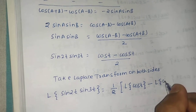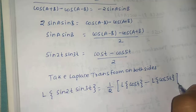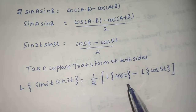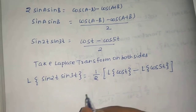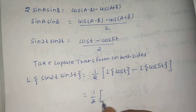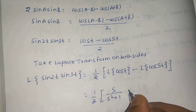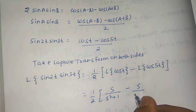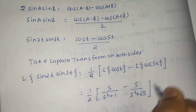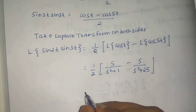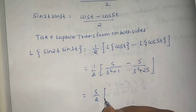We know the formula for the Laplace transform of cos(at) is s/(s²+a²). So L{cos(t)} = s/(s²+1) and L{cos(5t)} = s/(s²+25), since a=1 and a=5 respectively. Taking s out as a common factor gives s·[1/(s²+1) − 1/(s²+25)].